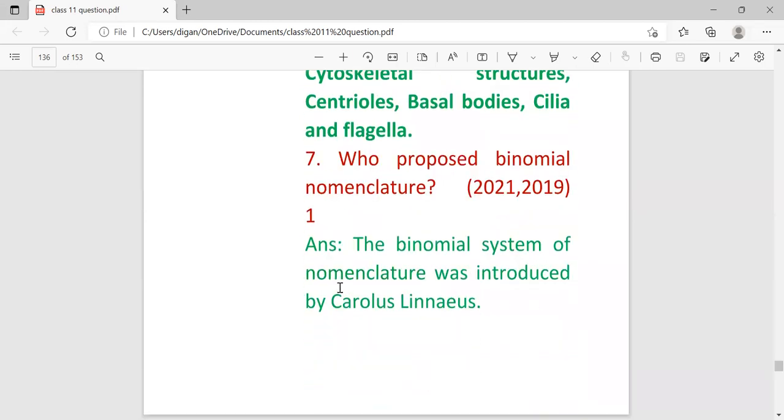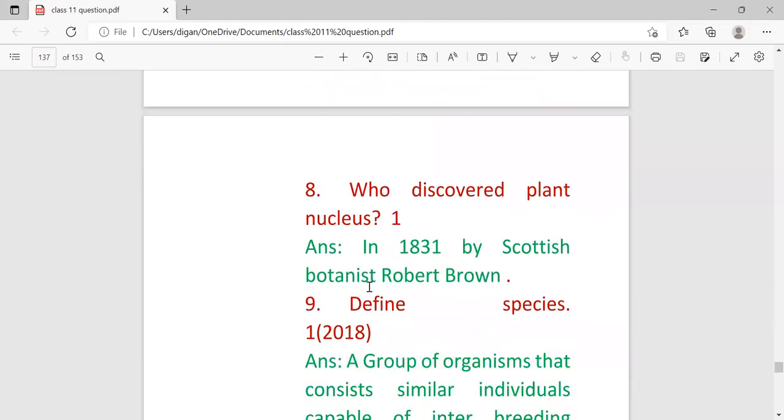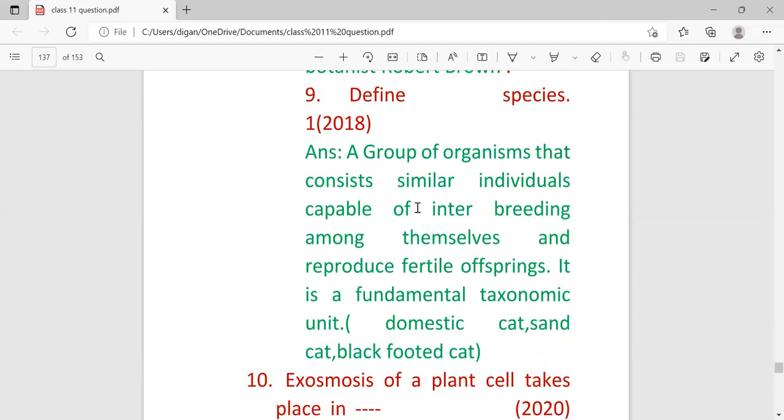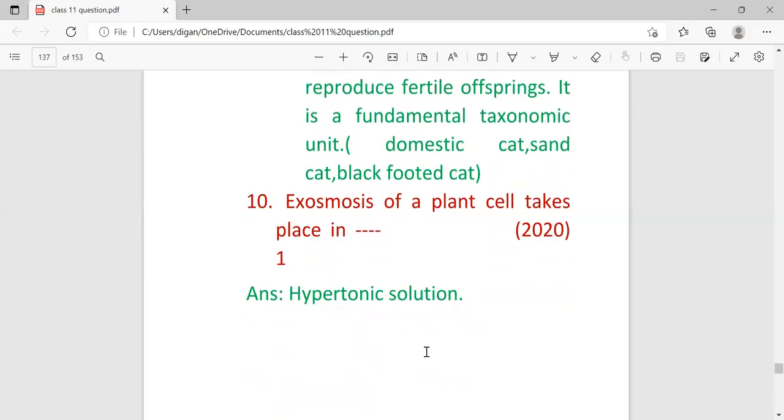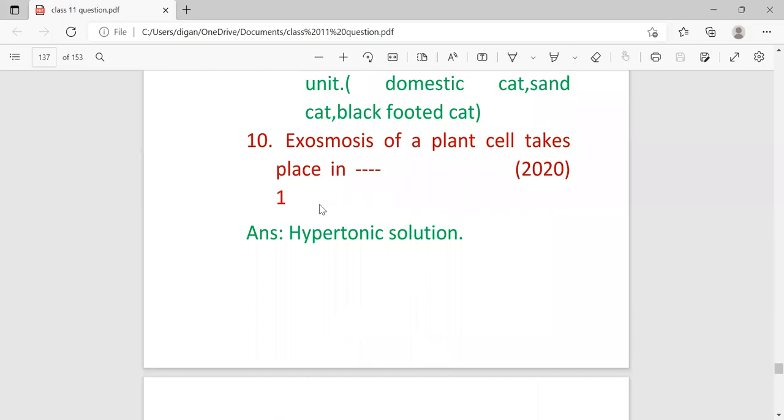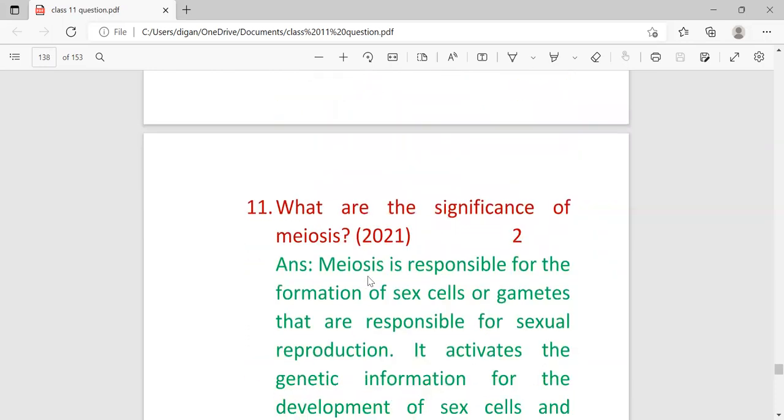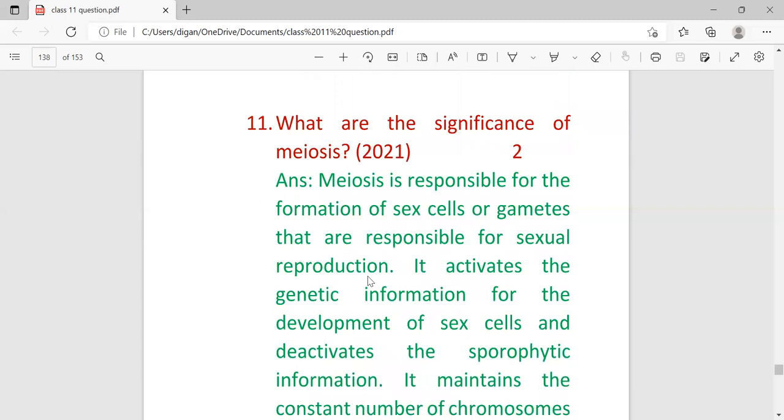Next, who proposed binomial nomenclature? This came in 2021 plus 2019. The binomial nomenclature was introduced by Carolus Linnaeus. Who discovered plant nucleus in 1831? It was discovered by Scottish botanist Robert Brown. Define species: A group of organisms that consists of similar individuals capable of interbreeding among themselves and reproducing fertile offspring. Exosmosis of a plant cell takes place in hypotonic solution.